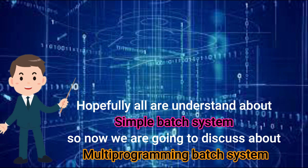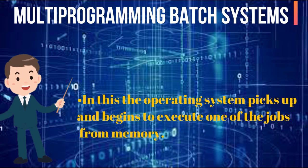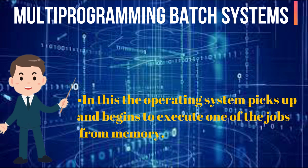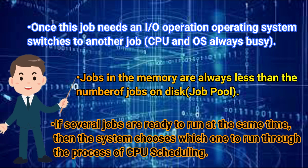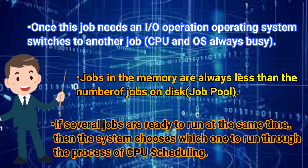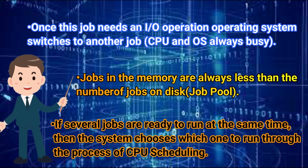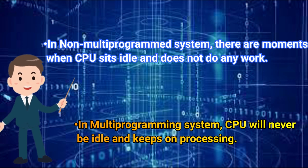Now we are going to discuss multiprogramming batch systems. In this, the operating system picks up and begins to execute one of the jobs from memory. Once this job needs an I/O operation, the operating system switches to another job — the CPU and OS are always busy. Jobs in memory are always less than the number of jobs on disk in the job pool. If several jobs are ready to run at the same time, the system chooses which one to run through the process of CPU scheduling. In a non-multiprogrammed system, there are moments when the CPU sits idle and does not do any work.